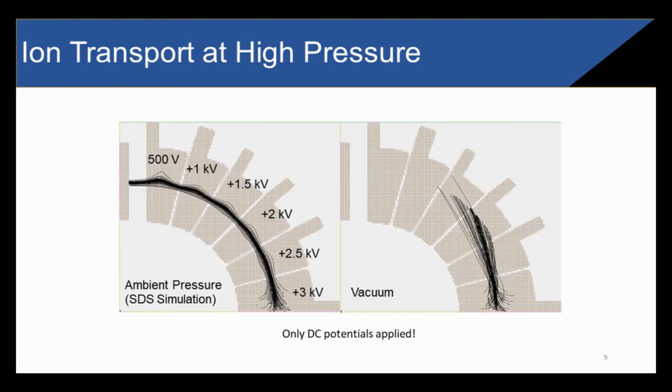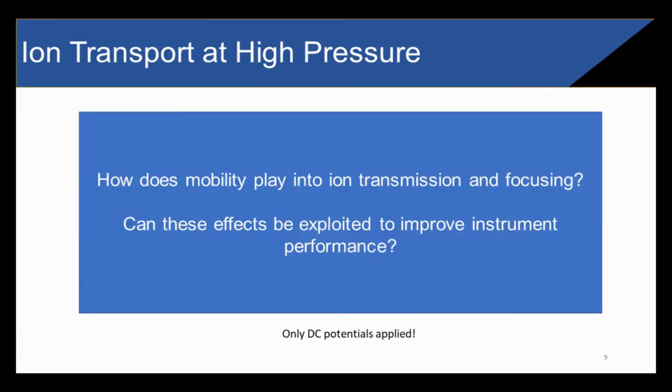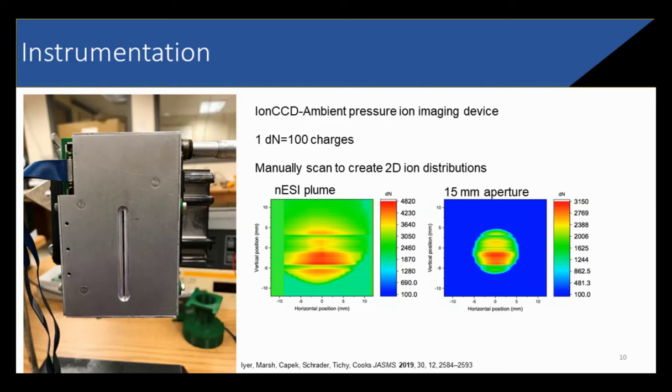One thing that I should mention is that in all of our studies of ions at atmospheric pressure, we've only ever applied DC potentials to the electrodes. At these pressures, RF frequencies have very little effect on ion motion. Given these interesting traits of ions at ambient pressure, there are two questions that we've been focused on and are now working with Agilent to understand. The first is, how does mobility play into ion transmission and focusing? The second is, can these effects be exploited to improve instrument performance?